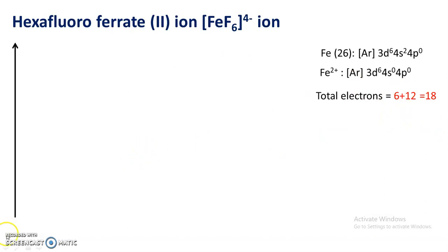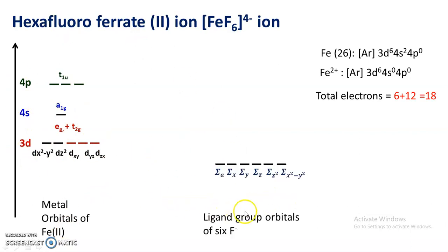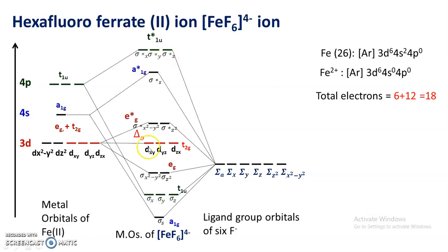We draw the molecular orbital diagram, with energy increasing from bottom to top. The orbitals contributed by Fe²⁺ are the 3d, 4s, and 4p orbitals, as previously explained. The 6 ligand group orbitals of fluoride are: Σa, Σx, Σy, Σz, Σz², and Σx²-y². At the center are the molecular orbitals of hexafluoroferrate(II) ion — bonding orbitals at the bottom with low energy, antibonding orbitals at the top with highest energy, and t2g orbitals remaining as non-bonding.